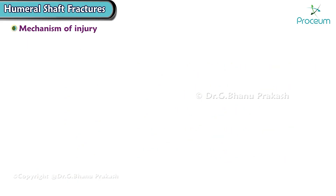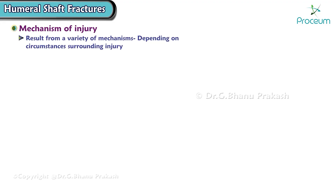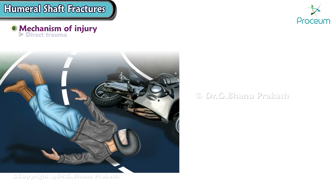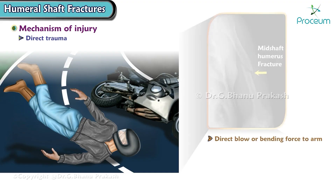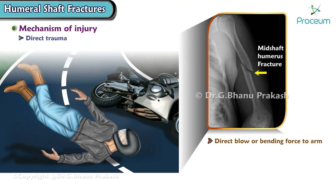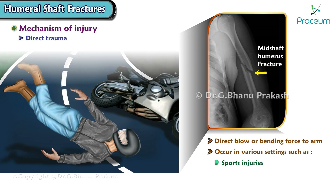Mid-shaft humerus fractures typically result from a variety of mechanisms depending on the circumstances surrounding the injury. Direct trauma — a direct blow or bending force to the arm — can lead to a mid-shaft humeral fracture. This can occur in various settings such as sports injuries, falls, or motor vehicle accidents.